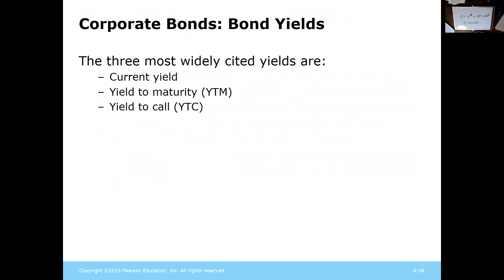When looking at bond yields — yield refers to an interest rate. We have a current yield, a yield to maturity, and a yield to call. The current yield is what you are paying right now for the bond. The yield to maturity is the effective interest rate you achieve from now until the bond matures based on what you actually paid and the interest payments you'll receive. We're mainly interested in current yield and yield to maturity.